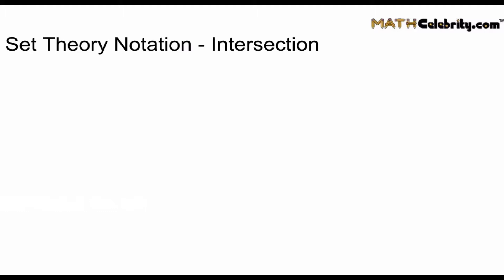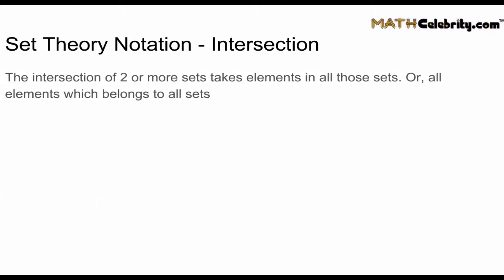So we talked about union, let's talk about intersection. You can think of union as or, A or B. Intersection is the opposite. It's A and B. The intersection of two or more sets takes elements in all those sets, or stated another way, all elements which belong to all the sets.